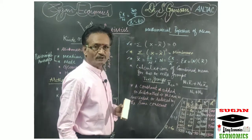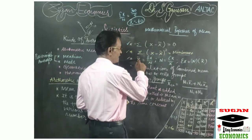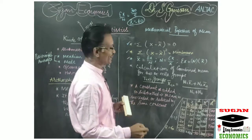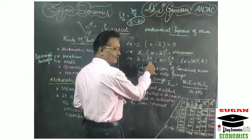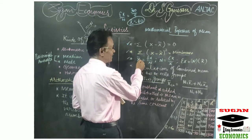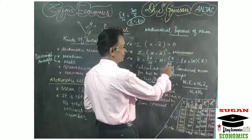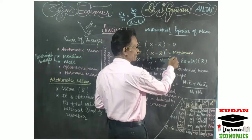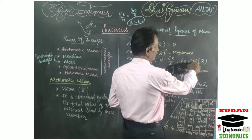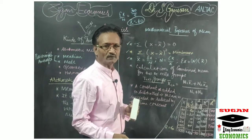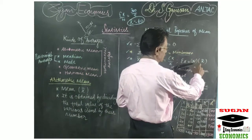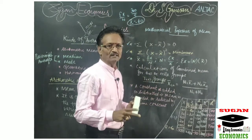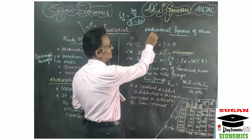Property 3: among the three values — x-bar, sigma-x, and n — if any two values are given, it is easy to calculate the third. If sigma-x and n are given, calculate x-bar as sigma-x divided by n. If sigma-x and x-bar are given, calculate n as sigma-x divided by x-bar. If x-bar and n are given, calculate sigma-x by multiplying n by x-bar. That is the third mathematical property of arithmetic mean.